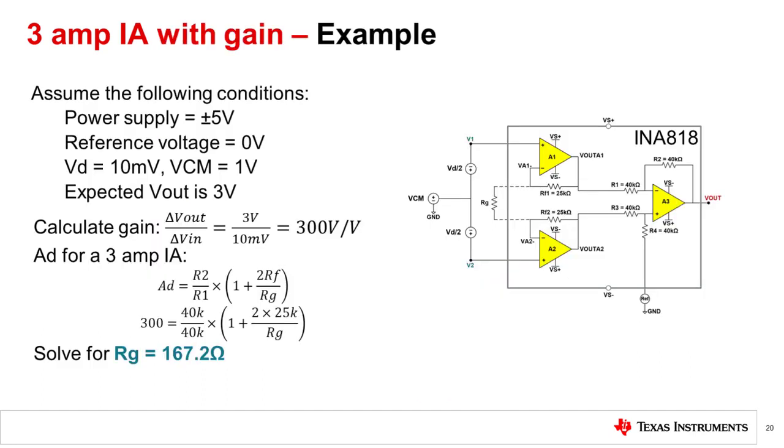Let's take everything we have learned and apply it to the example with the INA 818, one of our high precision instrumentation amplifiers. Assume we are powering this device by plus minus 5 volts. We have grounded the reference voltage. Our input differential voltage is 10 millivolts in the presence of a 1 volt common mode signal. And we want to amplify this differential voltage to 3 volts on the output. Let us calculate the gain required for this circuit. The gain is defined as the change in output voltage divided by the change in input voltage. In this case, that is 3 volts divided by 10 millivolts or 300 volts per volt. Using the gain equation for the INA 818 as specified in the datasheet, we need an RG resistor value of 167.2 ohms.